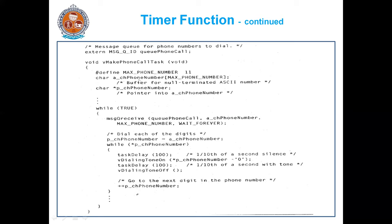These are the two variables used in the make phone call task. Next is the continuous loop. Here in this continuous loop, we are using MSG queue — a VxWorks OS function. Whenever a message has been received, it will take that phone number and copy it to the ACH phone number variable declared in our function. The maximum phone number length is also specified. This function waits forever until some phone number is placed in the message queue.